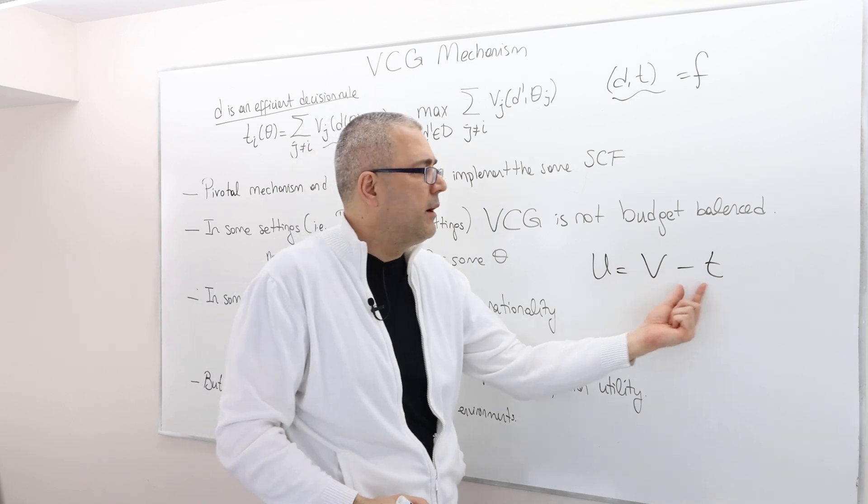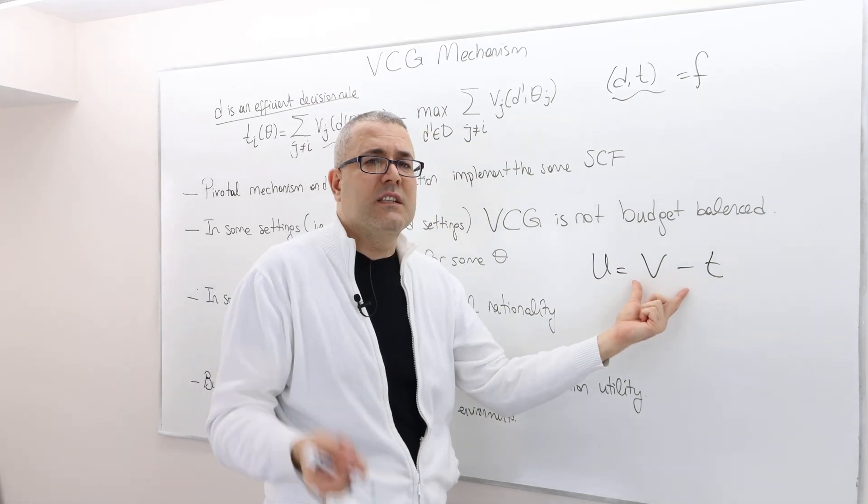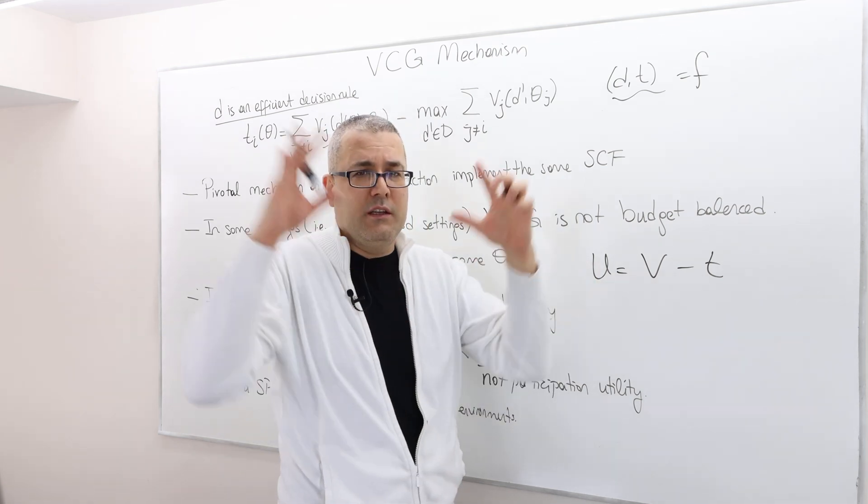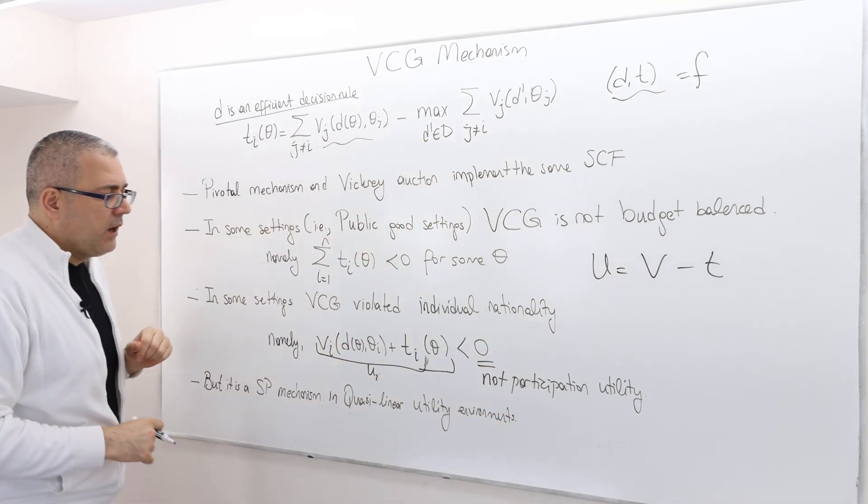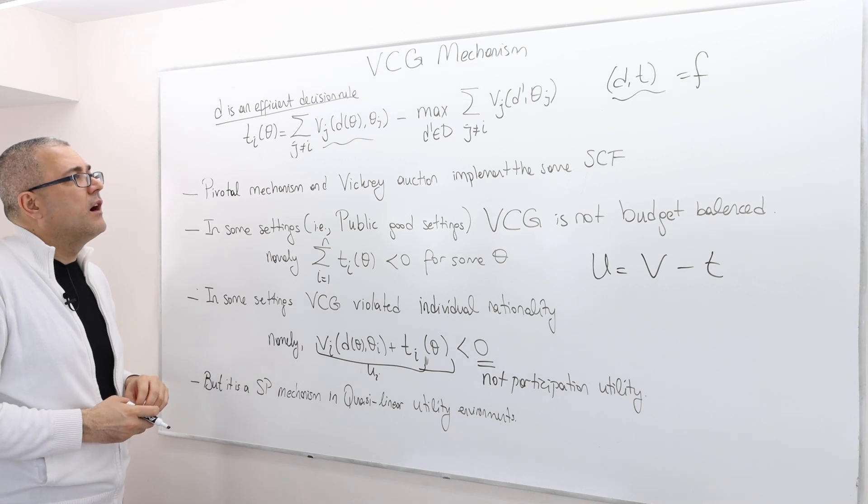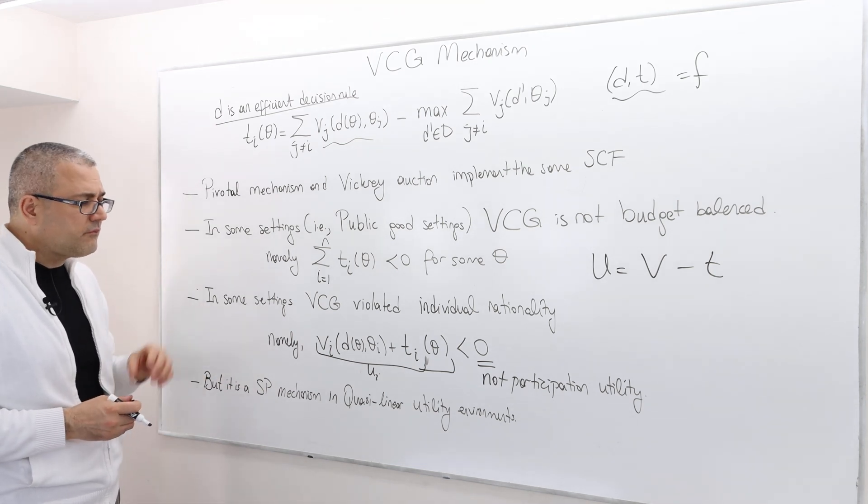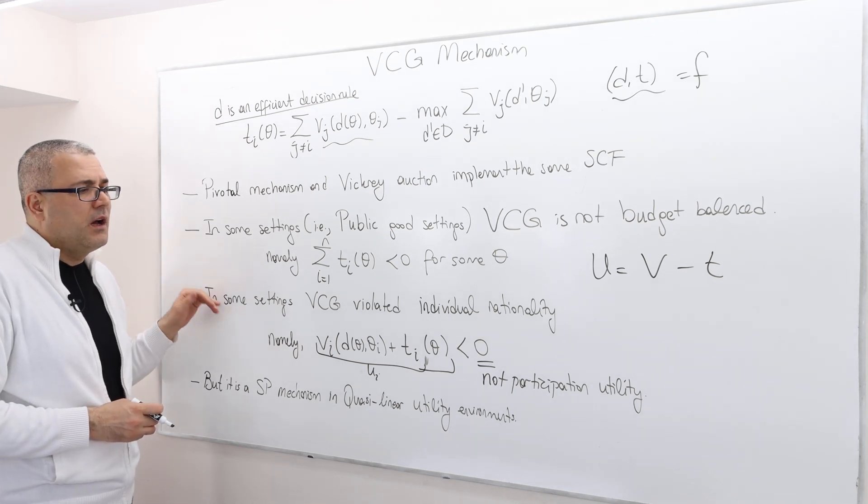In the sense that remember the quasi-linear utility function is like V minus T, so the V is the utility but also there's a transfer component in it. And so the transfer is linearly incorporated into the utility function U, the whole utility function. And so we call it a quasi-linear utility environment. In this environment VCG mechanism is a strategy proof mechanism but as I said it has some problems.